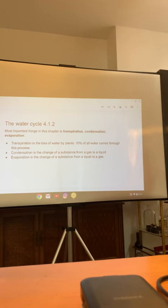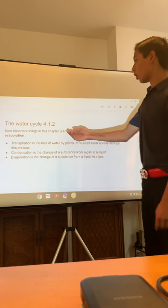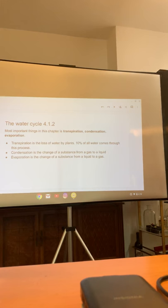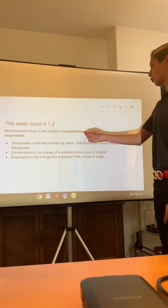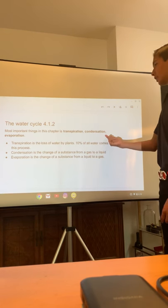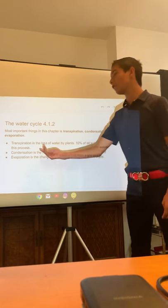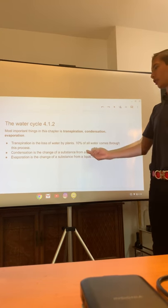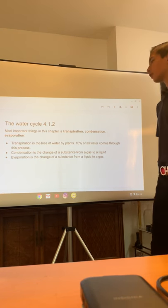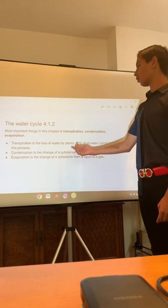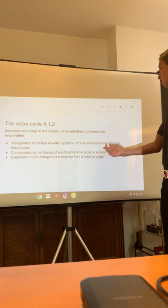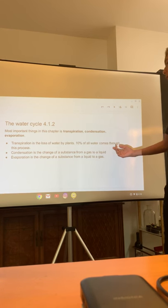The next slide is about the water cycle, 4.1.2. The most important things in this chapter are transpiration, condensation, and evaporation. So let me explain a little bit about transpiration. Transpiration is the loss of water by plants — 10% of all water comes through this process.